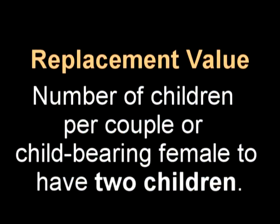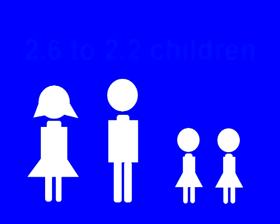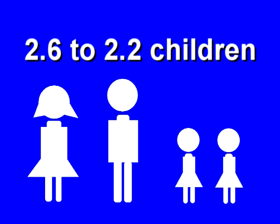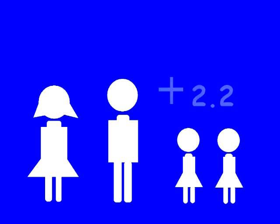Replacement value is the set of numbers or values for a couple or a childbearing female to have two offspring and a little bit more, depending on the mortality rate of the country or the region in which they reside. It can vary greatly from 2.6 down to 2.2. The value for equation purposes is set at 2.2 children per couple, since not all children will live to adulthood.